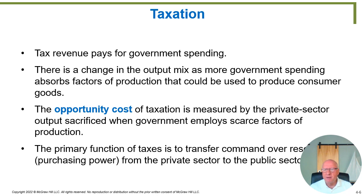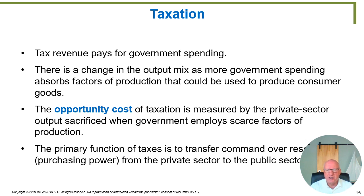Now let's talk about taxation, which is the main focus of this set of lectures. Tax revenue pays for most of government spending. There's a change in the output mix as more government spending absorbs factors of production that could otherwise produce consumer goods. If you had no taxes and enough income to buy a Mercedes, but the government puts a 30% tax on your income, your income drops enough that you can only afford a Nissan instead. Government taxation changes the kind of things the private market produces.